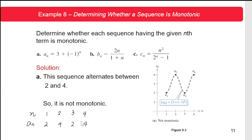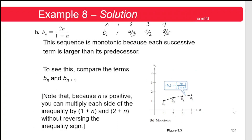As you can see, 2 < 4 but 4 > 2, so this is not a monotonic sequence. In the figure, a₁ = 2, a₂ = 4, then it goes increasing, decreasing, increasing — therefore this is not a monotonic sequence.